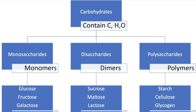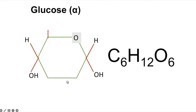The key monosaccharide is glucose, with the molecular formula C₆H₁₂O₆. There are examples of each category that you need to know. For monosaccharides, alpha glucose is the key one you'll learn about.